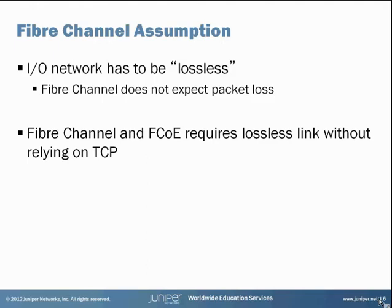The answer is Fibre Channel has a built-in flow control mechanism. The sending and receiving hosts set a credit to know the extent of room they have to process the packet. There are two types of flow controls: node-to-node and buffer-to-buffer. A node-to-node credit is the source and destination N port and it is end-to-end. A buffer-to-buffer credit is the link connecting the N port to the F port. This will be discussed further when configuring the FC interface on the QFX 3500 switch.